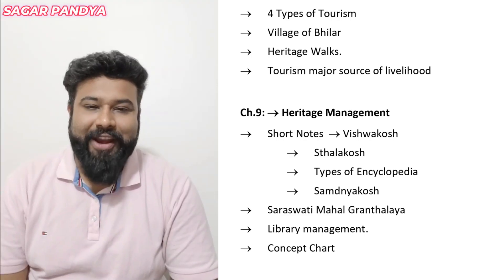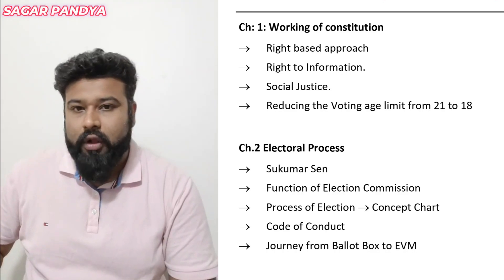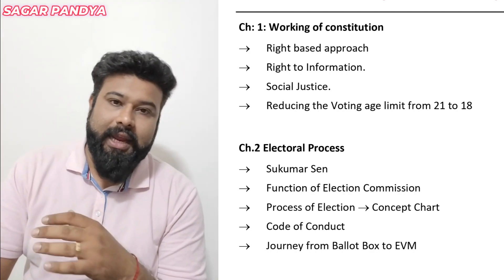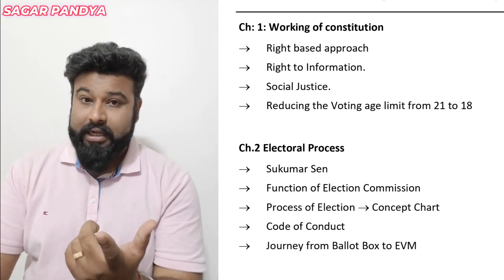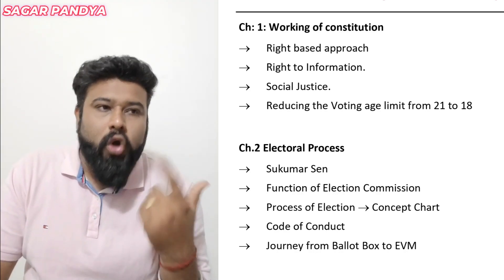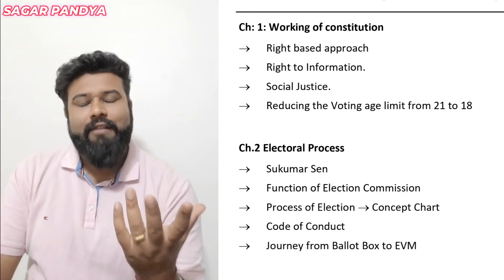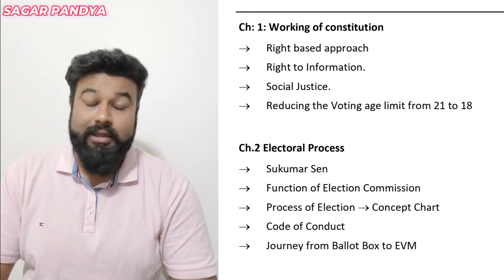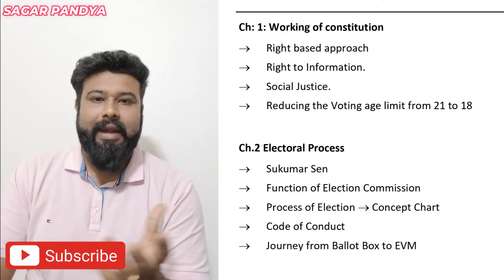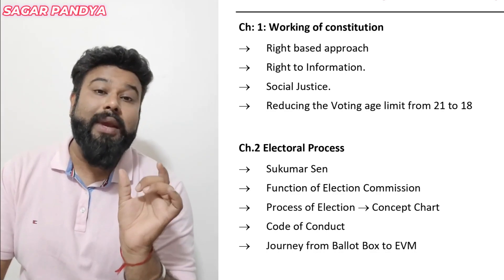Now let us move to the Political Science part. Always remember, 12 marks of Political Science — true or false and textual questions — will be the most important part. That becomes a reason for getting 39 out of 40 in a history paper. The first chapter is Working of the Constitution and the second chapter is Electoral Process, which you should have practiced thoroughly.